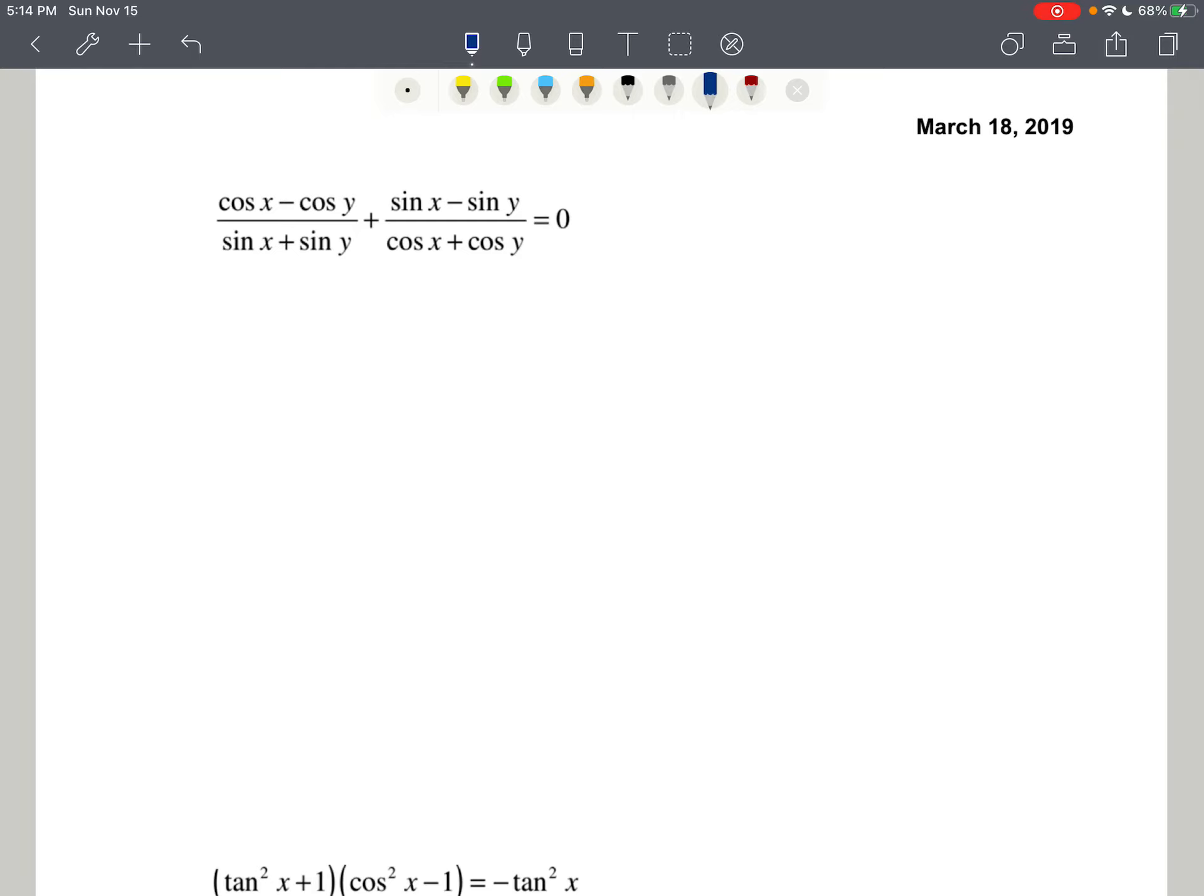Here we have cosine of x minus cosine of y over sine of x plus sine of y plus sine of x minus sine of y over cosine of x plus cosine of y, and when you add those two fractions together, you're going to get zero.